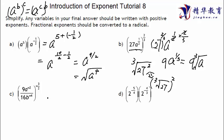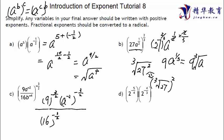So distributing negative three over two to each term gives us: 9 to the power of negative three over two, times a to the power of negative 2 times negative three over two, over 16 to the power of negative three over two, times b to the power of negative 4 times negative three over two. We'll work through these one by one.